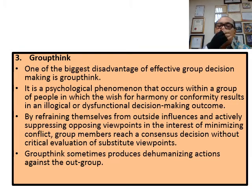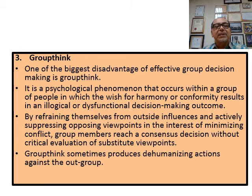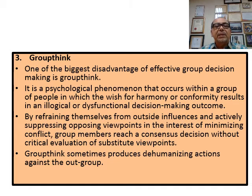One of the biggest disadvantages of group decision making is groupthink. Too many heads spoil the soup. This is a psychological phenomenon that occurs when a group of people prioritize harmony and conformity, resulting in illogical or irrational decision making. They try to explain it as: because of group thinking, so many heads come together but the group consensus overrides critical evaluation.